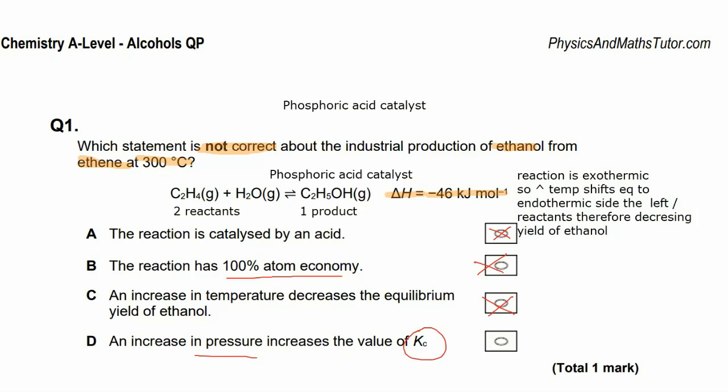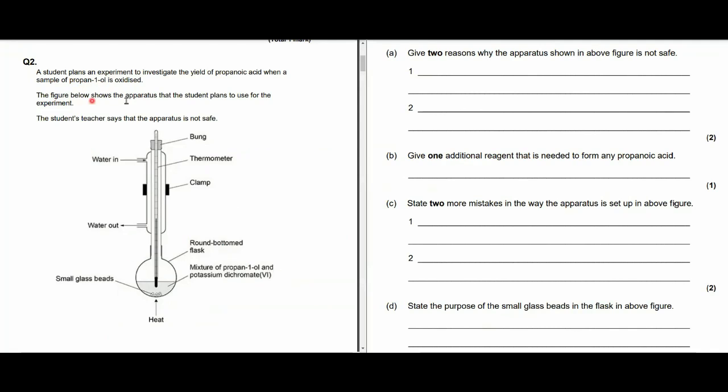So that's another true statement, which leaves our answer as the final one. And it says an increase in pressure increases the value of KC. Well, changing the pressure or the concentrations of reactants do not change the value of KC. It's only temperature that affects KC. So the correct answer for this one is D. Now, you guys, you can check out the description. I'll have a link for these questions in there.